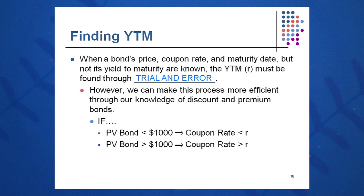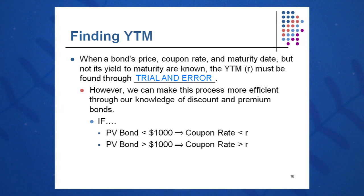We can guess smartly at R: if the price of the bond is less than $1,000, the coupon rate will be less than the required rate of return or yield to maturity. If the given bond price is greater than $1,000 — like $1,020 — our coupon rate must be higher than the yield to maturity, so we'd start guessing lower for R than the coupon rate. Understanding that relationship between coupon rate and R will help you solve these problems as you guess and check.